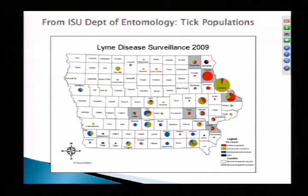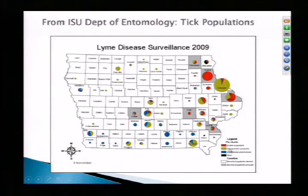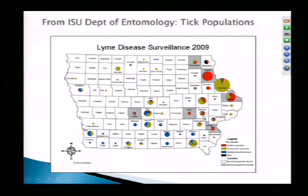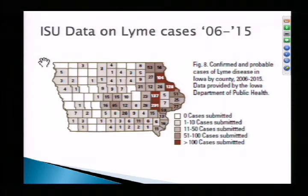From the ISU Department of Entomology, looking at tick populations — a surveillance reported in 2009 — the size of the circle shows the number of ticks evaluated and the pie chart shows the type. Here in Story County, Ixodes makes up around 20%, Dermacentor the largest percentage, and a small number of Amblyomma americanum. In my territory, the Ixodes tick makes up the majority. Additional ISU data on Lyme cases between 2006 and 2015 showed 85 cases in Polk County and 15 in Story County.